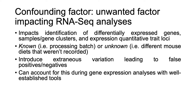Confounding factors are unwanted factors impacting RNA-seq analysis. They impact identification of differentially expressed genes, identification of samples and genes that cluster together in hierarchical clustering or principal component analysis, and identification of expression quantitative trait loci. Confounding factors can be known, for example processing batch or sequencing lane, or unknown, for example different mouse diets that weren't recorded in the experiment. These factors can introduce extraneous variation leading to false positives and false negatives.